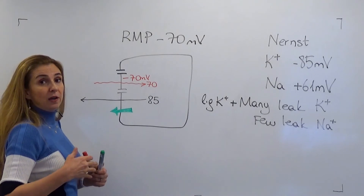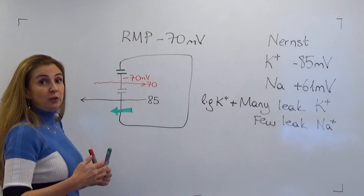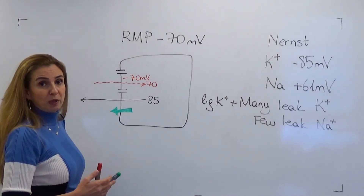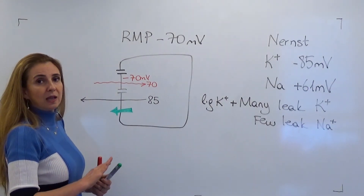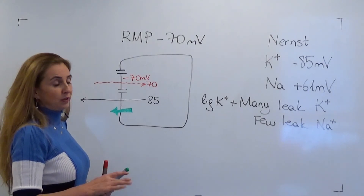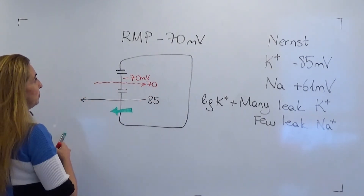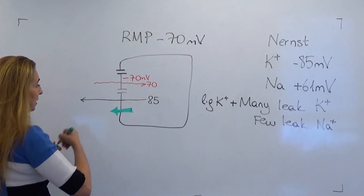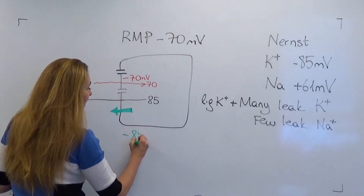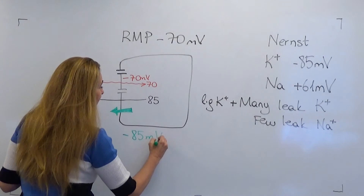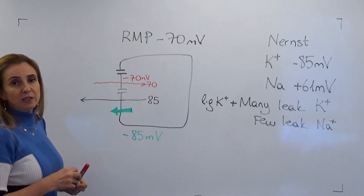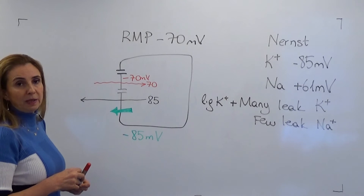This is no longer a resting membrane potential — it is now a local potential. With potassium moving outward, the membrane potential becomes more negative and moves towards the Nernst potential of potassium, which is minus 85 millivolts.